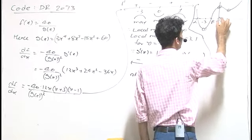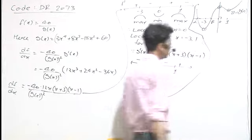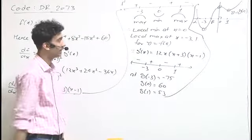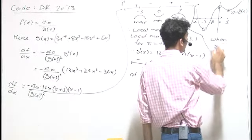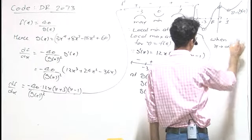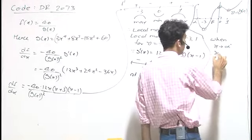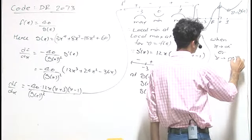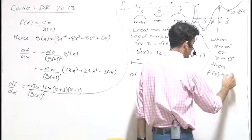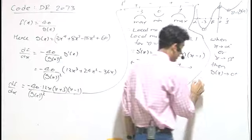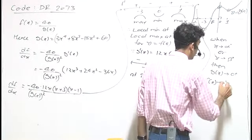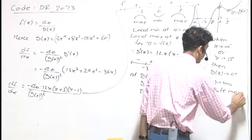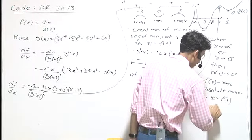As we can see clearly, the graph of y = g(x) cuts the x-axis twice — once on the left side of -3 and once on the right side of -3. When x tends to alpha from the left, or x tends to beta from the right, g(x) tends to 0⁺, and hence f(x) tends to positive infinity. Therefore, the absolute maximum of y = f(x) is not defined.